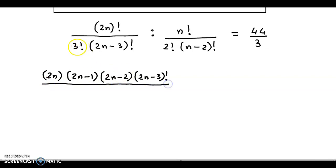The whole thing divided by, now 3! value we know is 6, 3×2×1 that's 6 times (2n-3)!.